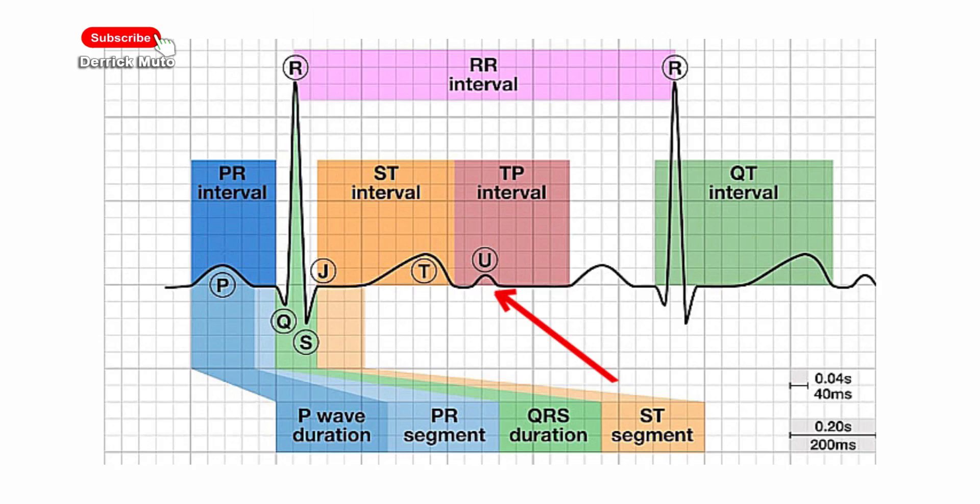Abnormalities of the U wave: a prominent U wave, one that is 25% of the height of the T wave, and an inverted U wave.